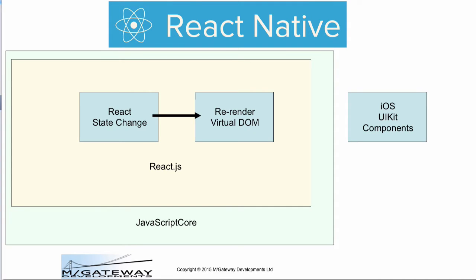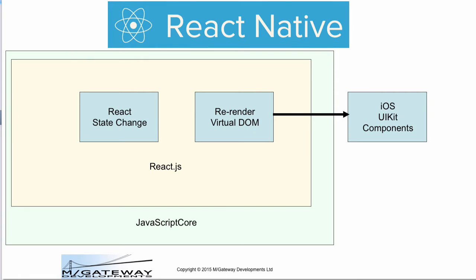When you render markup in React.js, you actually manipulate a virtual DOM, and behind the scenes, React.js works out the most efficient and fastest change needed to the actual browser's DOM for you. So React Native applies the same approach. You write to the same virtual DOM, but now, behind the scenes, React Native updates and modifies the iOS device's user interface using the proper native UIKit components, not JavaScript emulations.